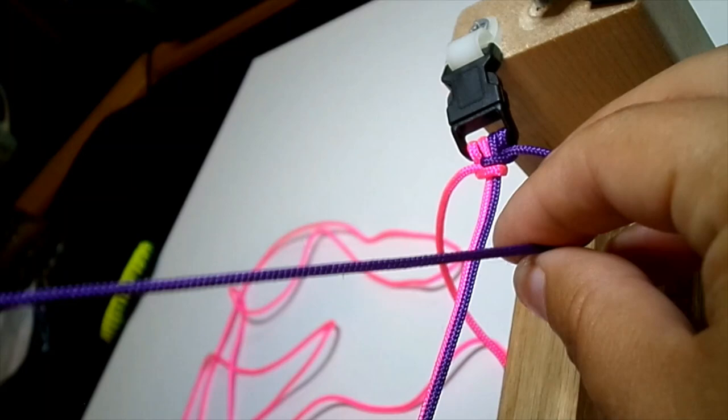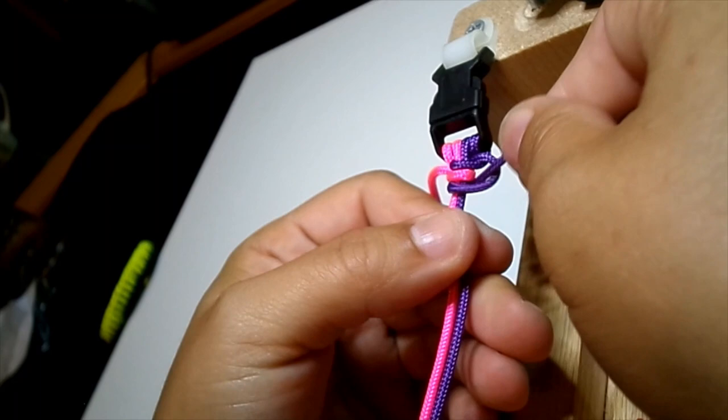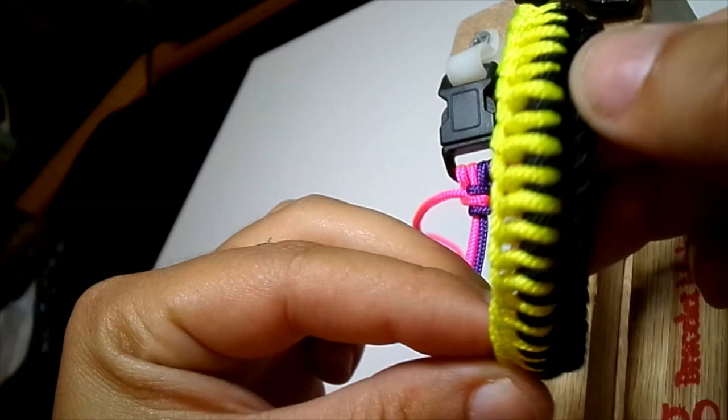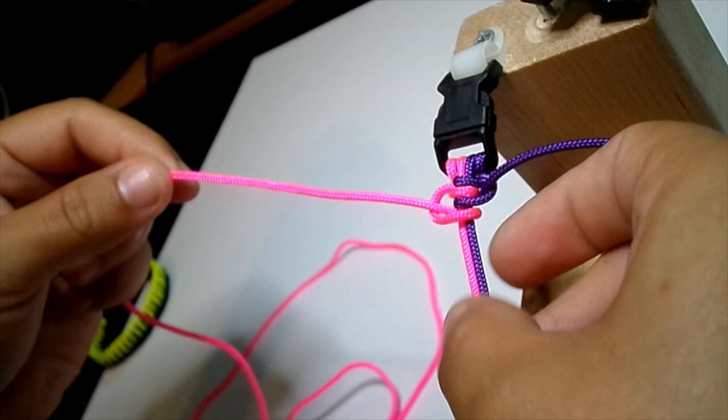And again, make this nice and tight. The first couple of knots that you make will be the hardest ones, but once you get those nice and tight, then you're good to go. You just repeat alternating sides, so again over, underneath the center, and pull through. And as we continue to do this you'll start to see this pattern develop.